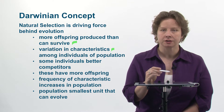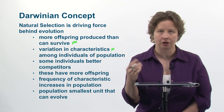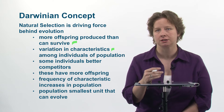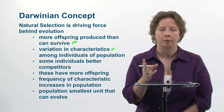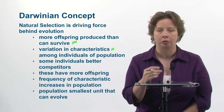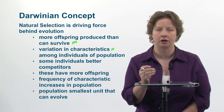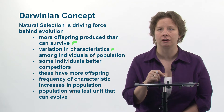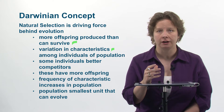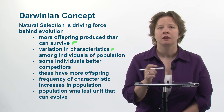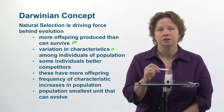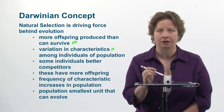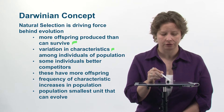Individuals in a population vary in their inherited characteristics. For instance, you might have inherited brown hair color from your parents, whereas your siblings might have inherited blonde hair color. Among individuals in a population, some are better competitors than others.